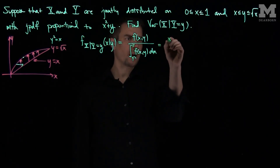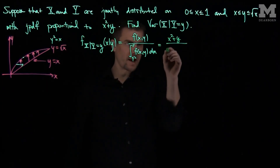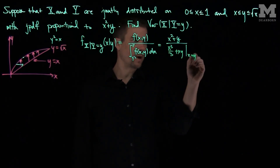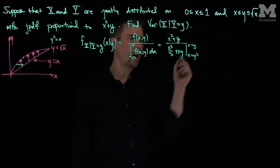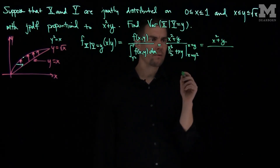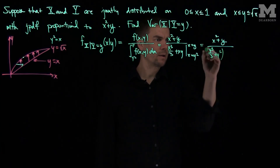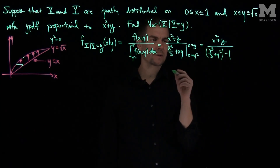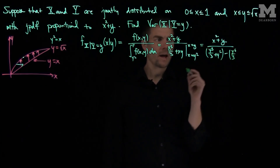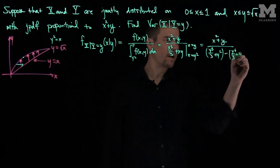The numerator becomes x squared plus y. We'll integrate this function with respect to x, getting x cubed over 3 plus xy from x equals y squared to x equals y. Simplifying: when x equals y we get y cubed over 3 plus y squared. Then we subtract the term when x equals y squared, which gives y to the sixth over 3, and when x equals y we have plus y cubed.